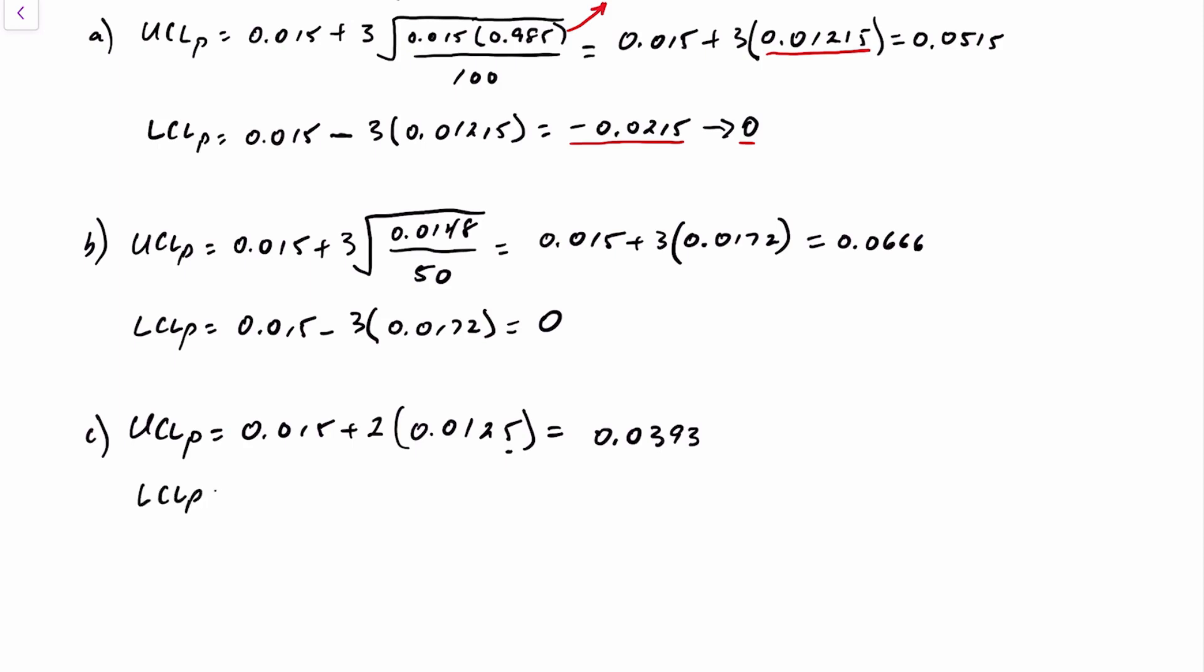The lower control limit: 0.015 minus 2 times 0.0125. That's going to be a negative number again, so go with 0.